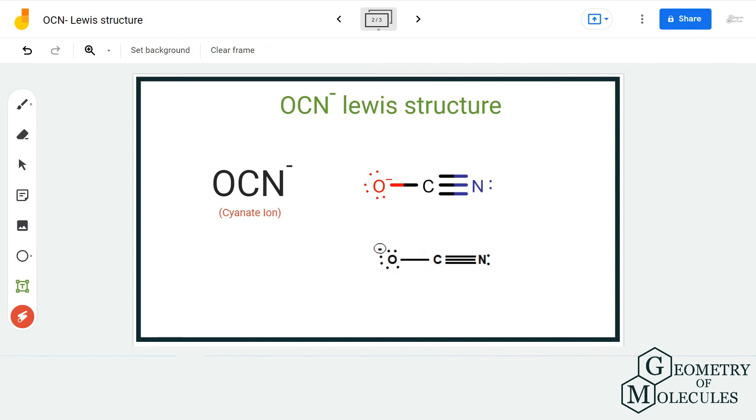If you calculate the formal charges for this molecule, you will come to know that the formal charges for carbon and nitrogen are both zero, and oxygen has -1 charge, which is completely fine given that it is the most electronegative atom here.